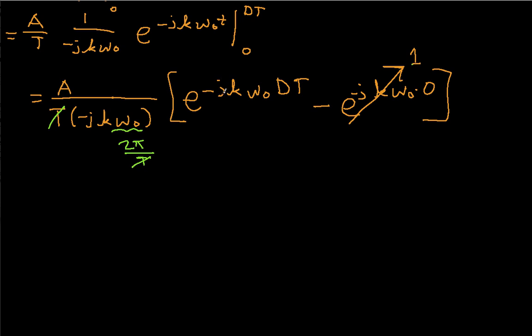And we have a similar thing up here. We had e to the j k omega 0 is 2 pi over T, so this T and this T will cancel.